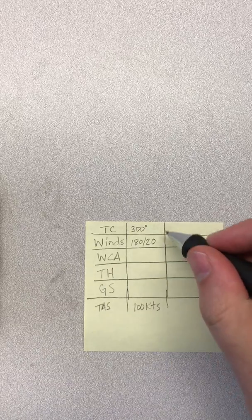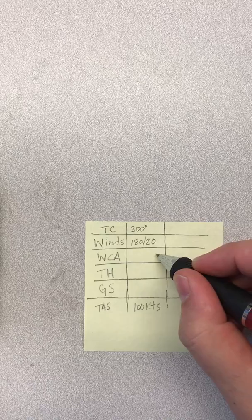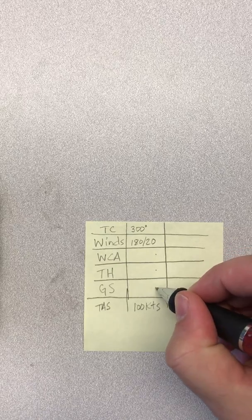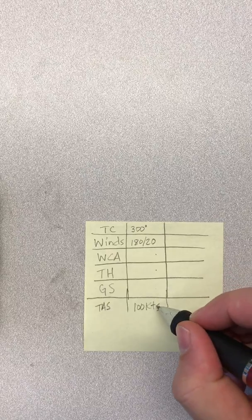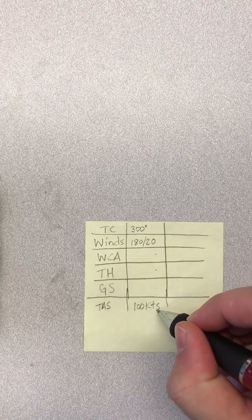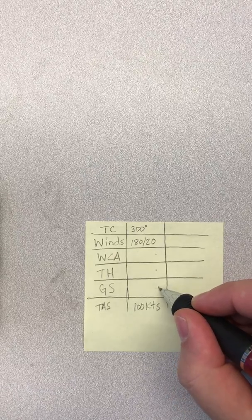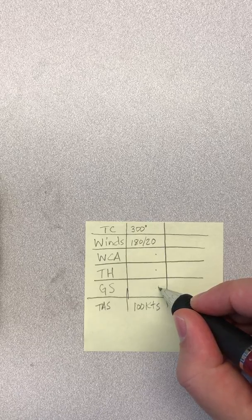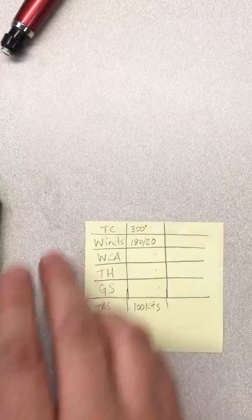We're going to need those three pieces of data, and once we have those three, we should then be able to determine wind correction angle left or right to find our true heading and then also find out how fast we're going over the ground. Their speed through the air could be 100 knots, but we need to determine ground speed to determine estimated time en route and fuel requirements.